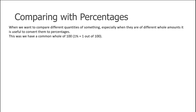Now let's have a look at how we can compare different things with percentages. When we want to compare things, especially when they are different whole amounts, it's really useful to show them as a percentage because it's really easy to compare. When they're both percentages, it makes it much easier to compare. The fact that we have a common denominator of 100 — one out of a hundred being one percent — makes that really easy.